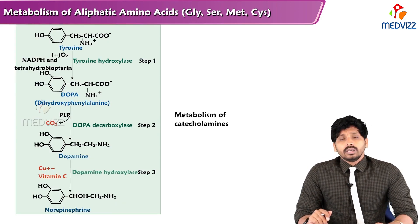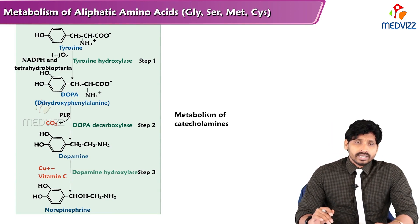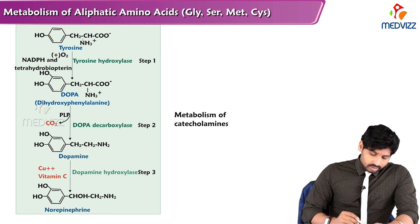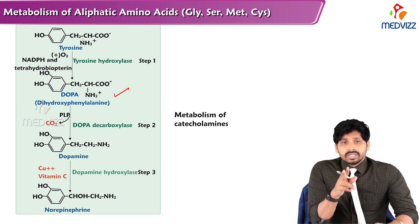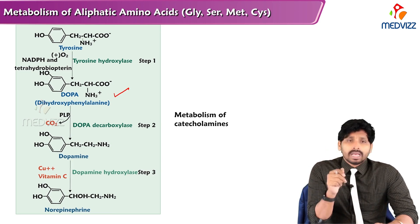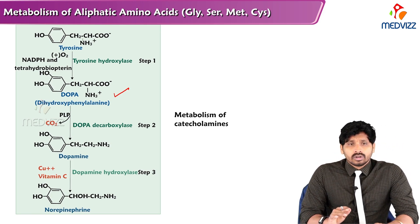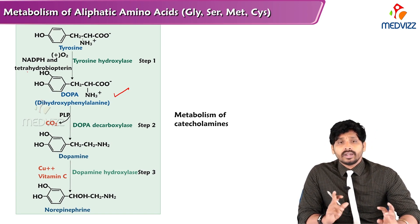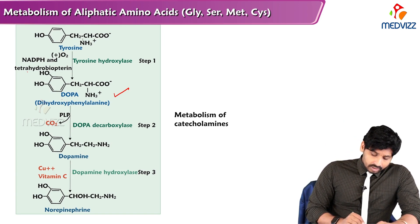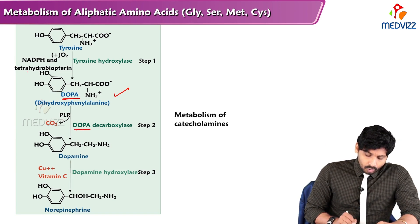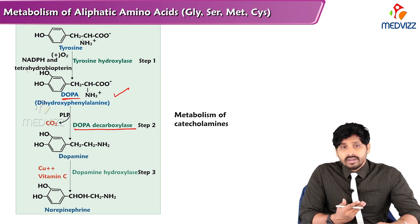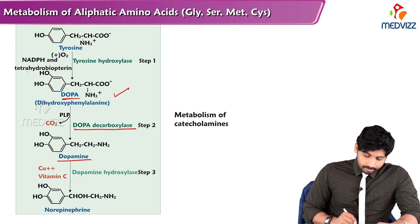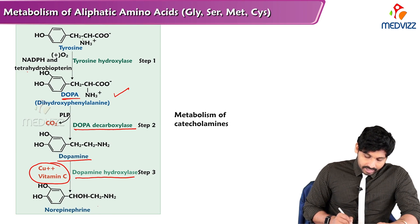The second important substance synthesized from tyrosine is catecholamines. Tyrosine is converted into DOPA by the enzyme tyrosine hydroxylase, located in the adrenal medulla, requiring molecular oxygen and tetrahydrobiopterin — similar to phenylalanine hydroxylase. DOPA is then converted to dopamine by DOPA decarboxylase, a PLP-dependent enzyme that removes CO2. Dopamine is converted to norepinephrine by dopamine beta-hydroxylase, a copper- and vitamin C-dependent enzyme.